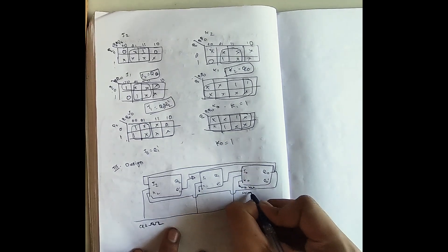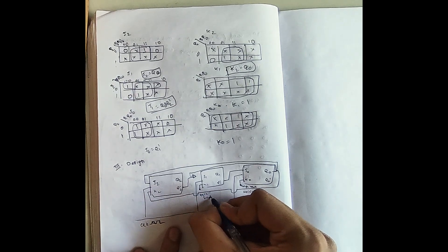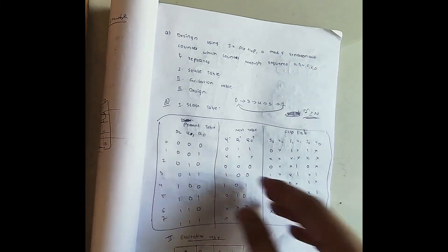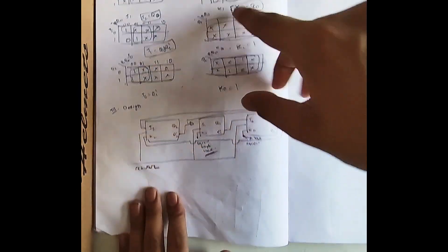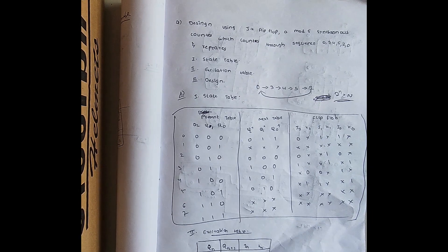So that is the complete design for the JK flip-flop mod-5 synchronous counter. We drew the state table, excitation table, used K-maps to minimize expressions, and then drew the final design. Thank you guys for watching my video — please subscribe to get the latest video updates.